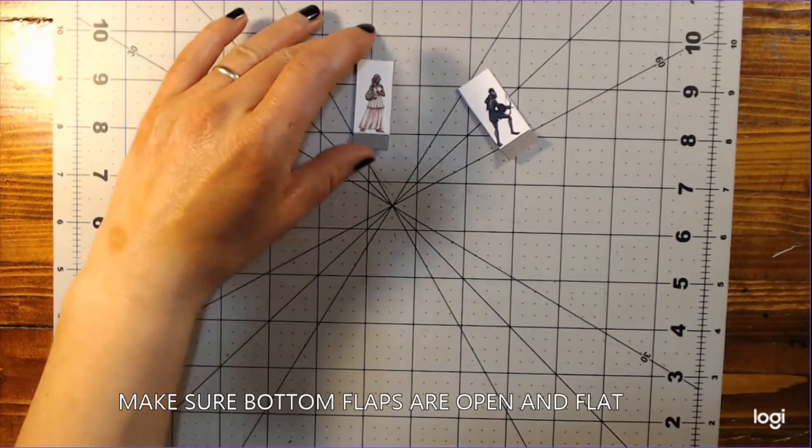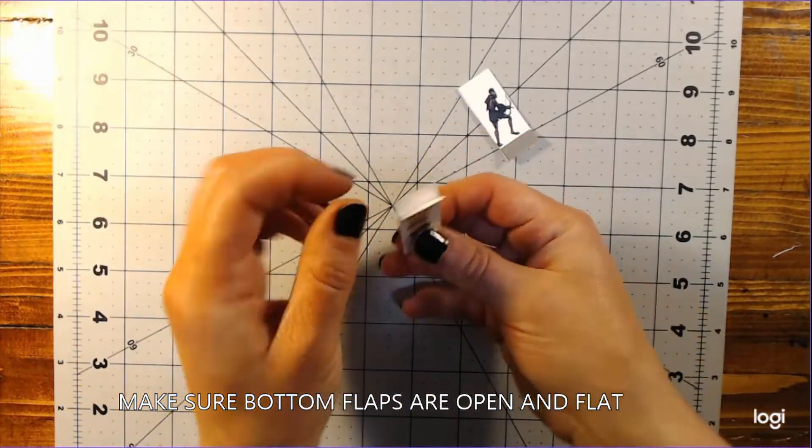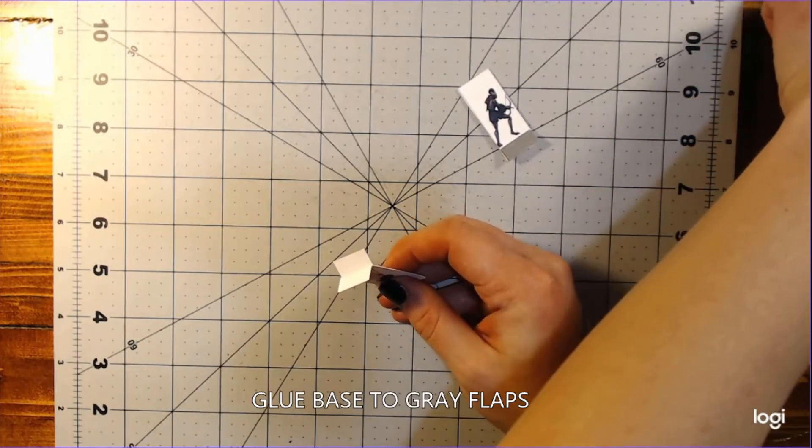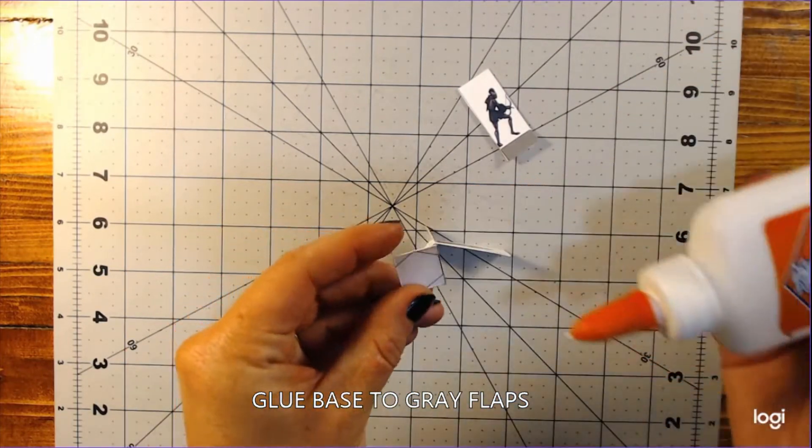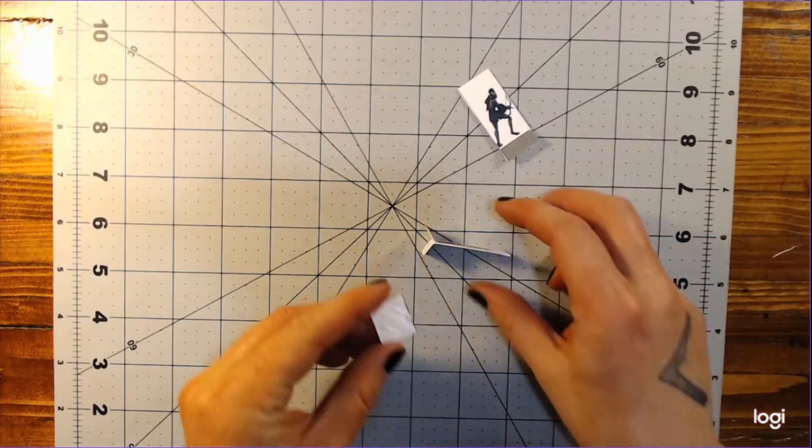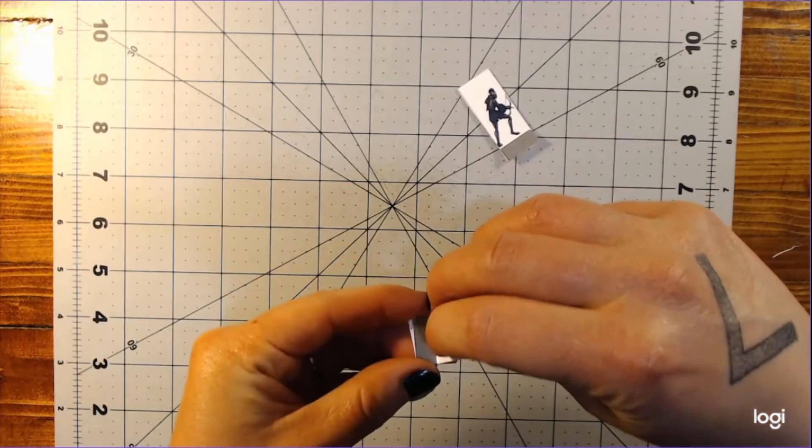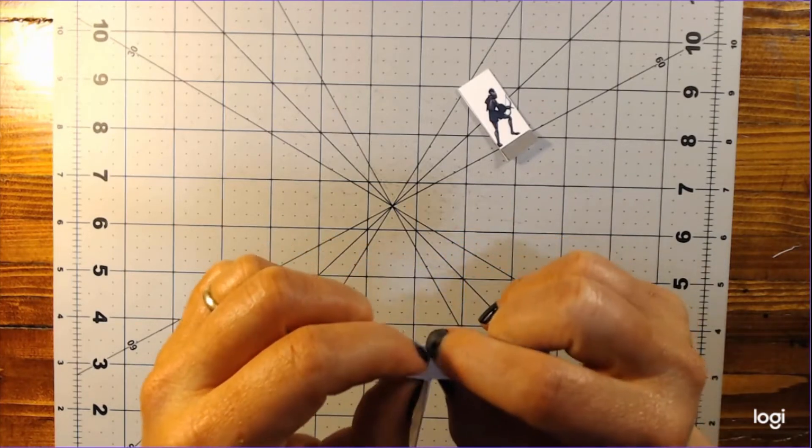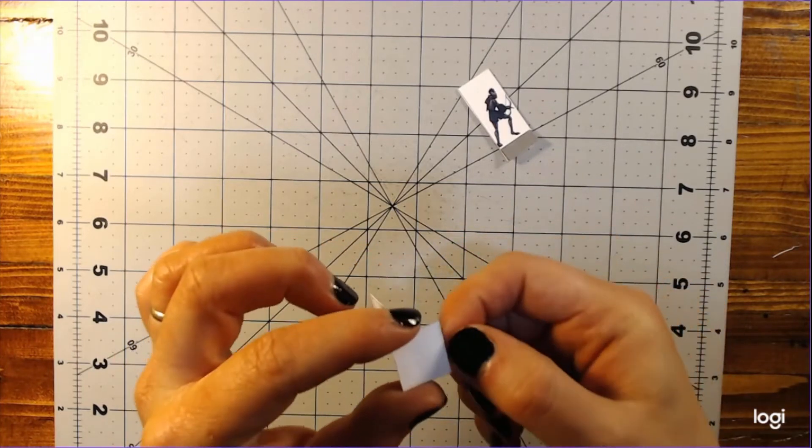Now you're ready to attach bases to the figures. Make sure the bottom flaps are opened out to be flat and perpendicular to the figure. Then take one of your bases and apply some liquid school glue. Stick the gray flaps to the base and hold them together for at least a minute while the glue sets. Once the glue is set, you have a completed paper miniature.